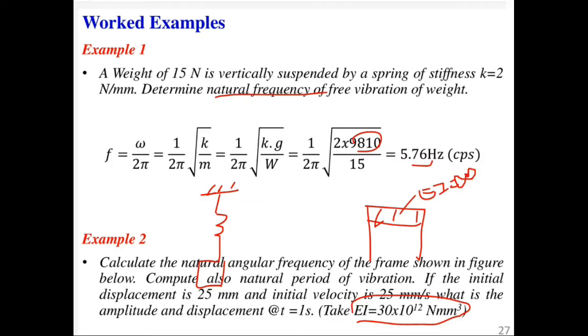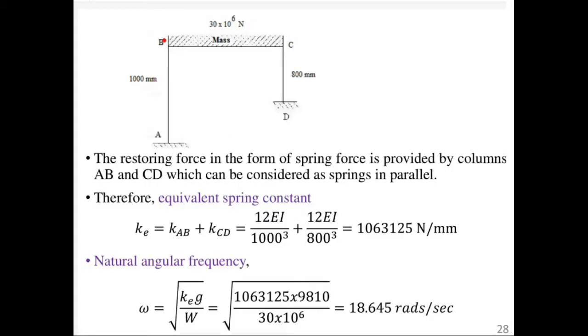This is the frame we have here: columns ABCD with a girder having a mass of 3×10^6 newtons. The restoring force is provided by the spring.